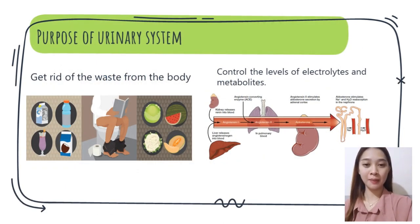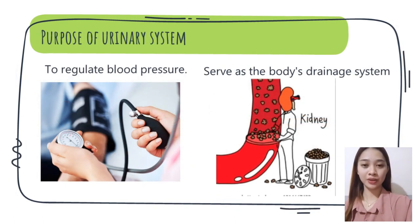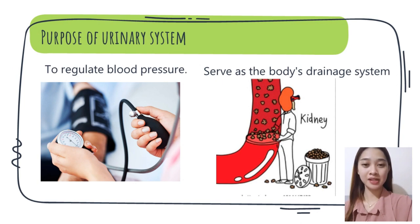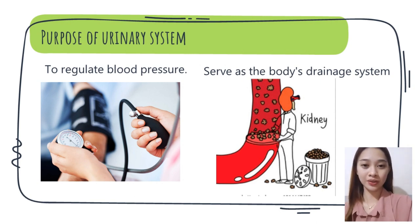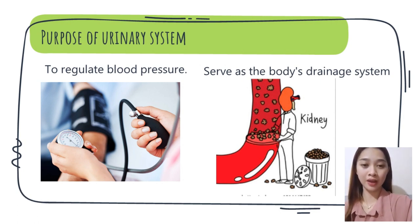The urinary system gets rid of waste from the body, controls the levels of electrolytes and metabolites, regulates blood pressure, and serves as the body's drainage system by removing urine. The kidneys have an extensive blood supply by way of the renal arteries and drain through the renal veins. The ureters are tubes made of smooth muscle fiber that move urine toward the urinary bladder, where it is expelled through urination.